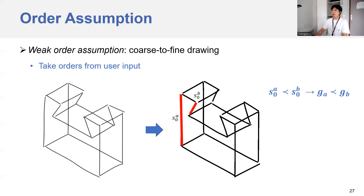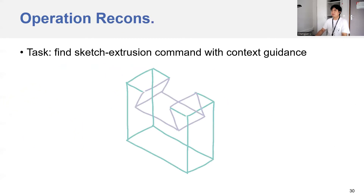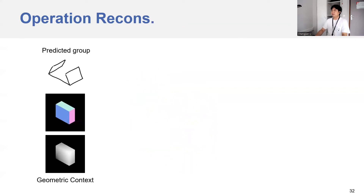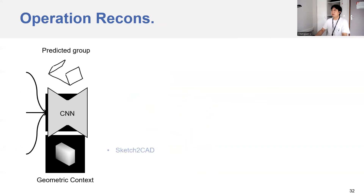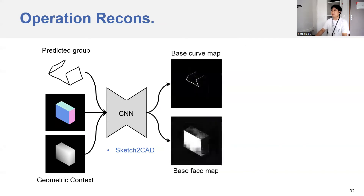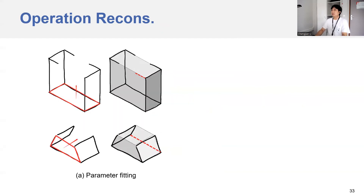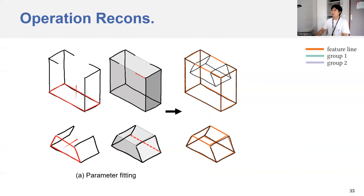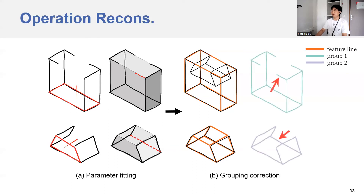Till now, we have solved the order issue. Now let's move to the regressor. The main task is to find the sketch extrusion parameters based on context guidance. Given the predicted group and the geometric context, we employ a simple UNet structure as in our previous sketch-to-CAD work to predict the base curve and base face maps. Having these two maps, we do geometric fitting and reasoning to produce the parameters. For this example, the box and polygon shapes are successfully obtained. We do one more step of fitting: for each reconstructed shape, we detect all the feature edges marked in orange, and since we are more confident about the reconstruction, we use those feature edges to double-check the grouping result so as to correct errors.